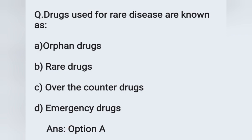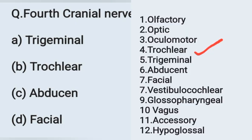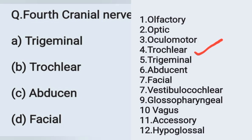Next question: The fourth cranial nerve is — option A: trigeminal, option B: trochlear, option C: abducens, option D: facial. The cranial nerves in order: 1st olfactory, 2nd optic, 3rd oculomotor, 4th trochlear, 5th trigeminal, 6th abducens, 7th facial, 8th vestibulocochlear, 9th glossopharyngeal, 10th vagus, 11th accessory, 12th hypoglossal. The fourth cranial nerve is the trochlear nerve. Option B is the correct answer.